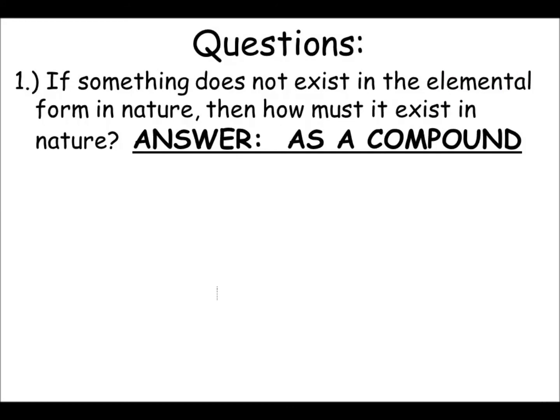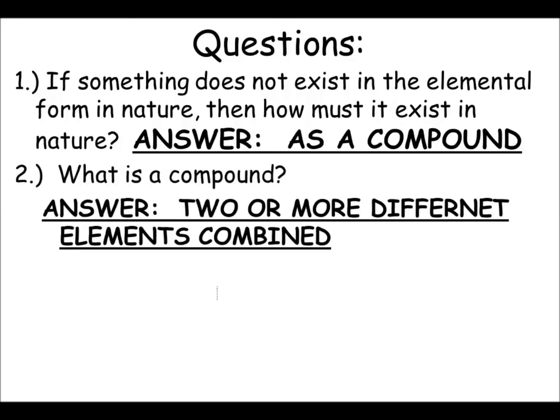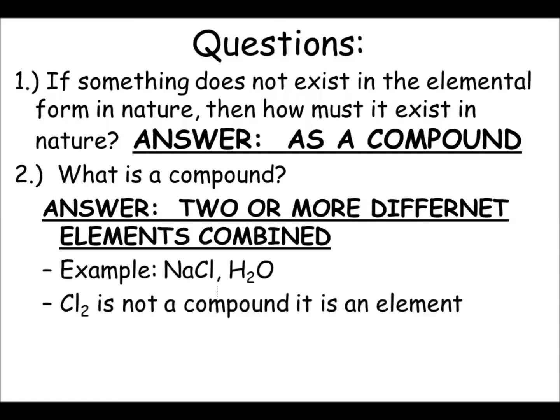In conclusion, if something does not exist in elemental form in nature, then how does it exist? The answer is as a compound. A compound is two or more different elements combined on the atomic level. Some examples are NaCl—you have a sodium atom that combines with a chlorine atom and it forms sodium chloride, or table salt. Another example is water, H2O.